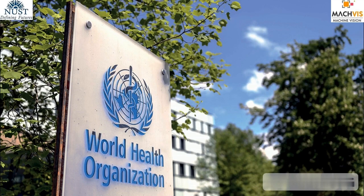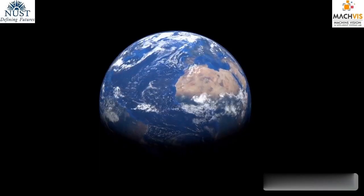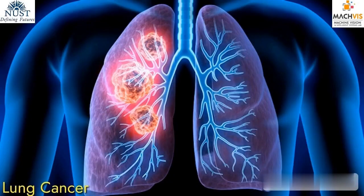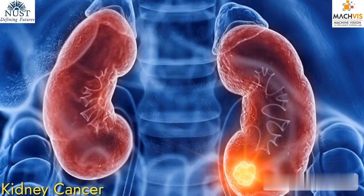According to the World Health Organization, cancer is the second leading cause of death globally, accounting for an estimated 10 million deaths, or 1 in 6 deaths, in 2020. Cancer is a large group of diseases that can start in almost any organ or tissue of the body. According to oncologists, prognostic information provided at the time of cancer diagnosis has significant implications for patient treatment and monitoring.